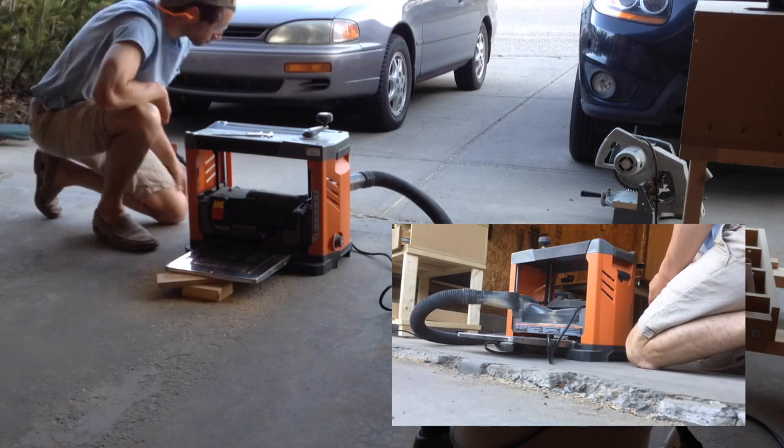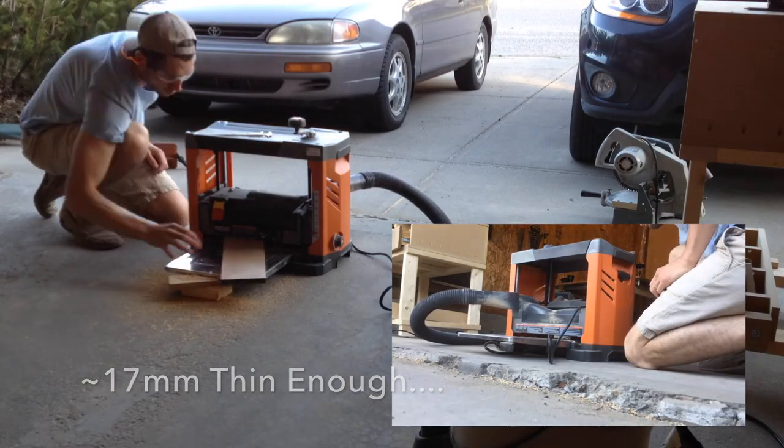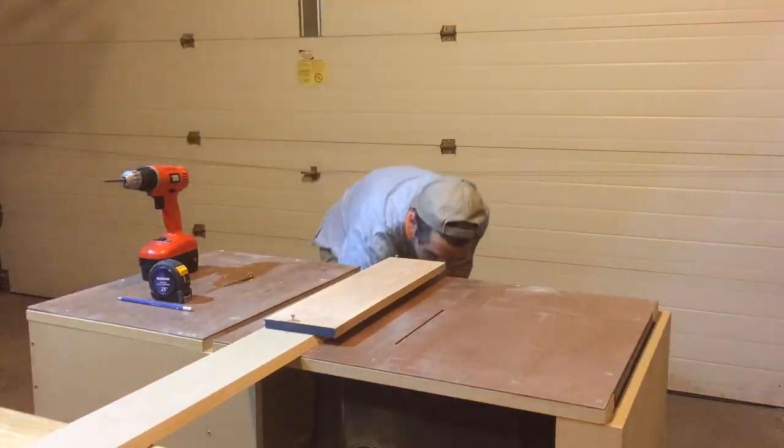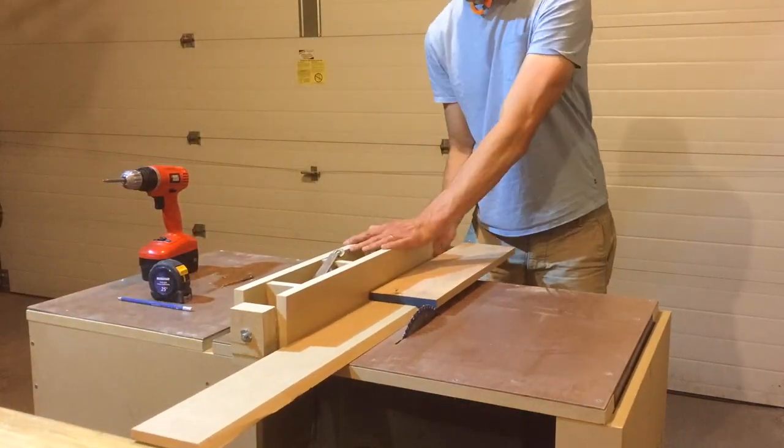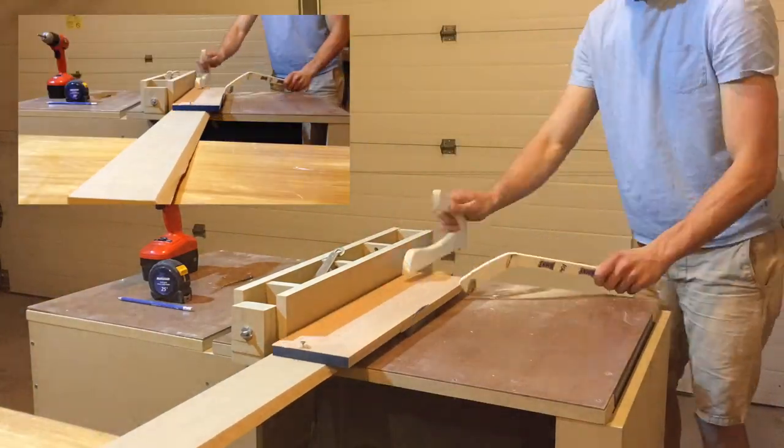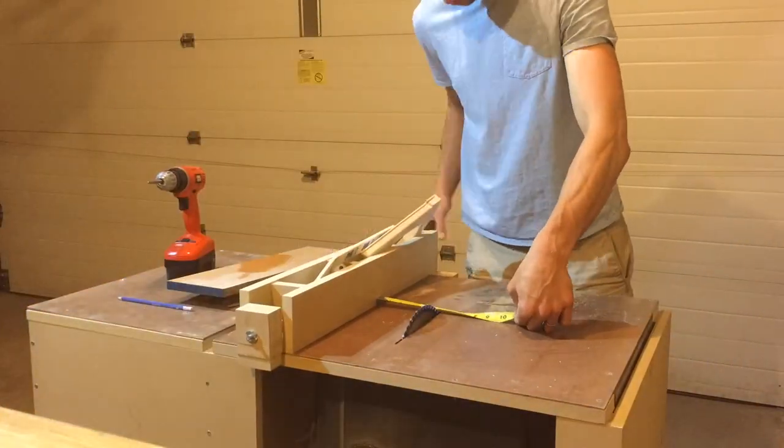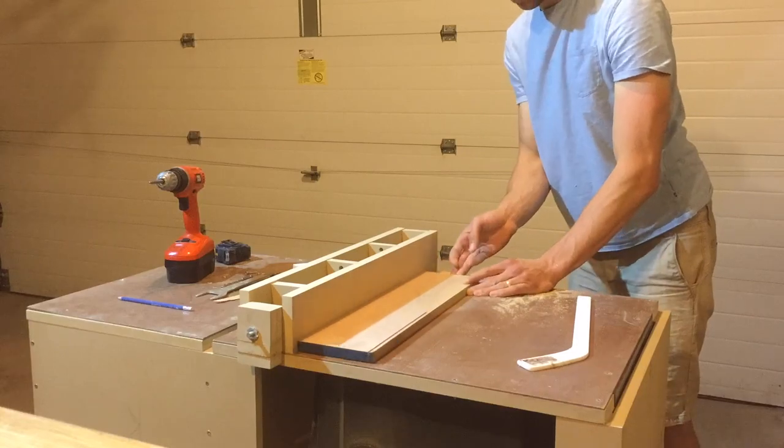I started by milling some cherry down to a random thickness. I then jointed both sides using my table saw by fastening the cherry to some scrap MDF and using the straight edge as a guide along the fence. I then ripped a thin strip off the other side to make everything parallel.